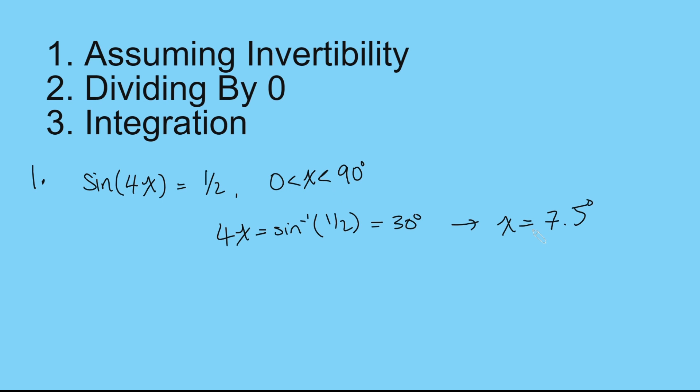However, we cannot do this. This is not quite correct. Because just because sine of 4x is a half, that does not necessarily mean that 4x is 30 degrees. It could be something else. So this is a mistake. I mean, technically, this is a correct solution, but there is actually one other solution here. And for this, if this was maybe three marks, you probably would only get one mark from this question, because we didn't consider the other solution.